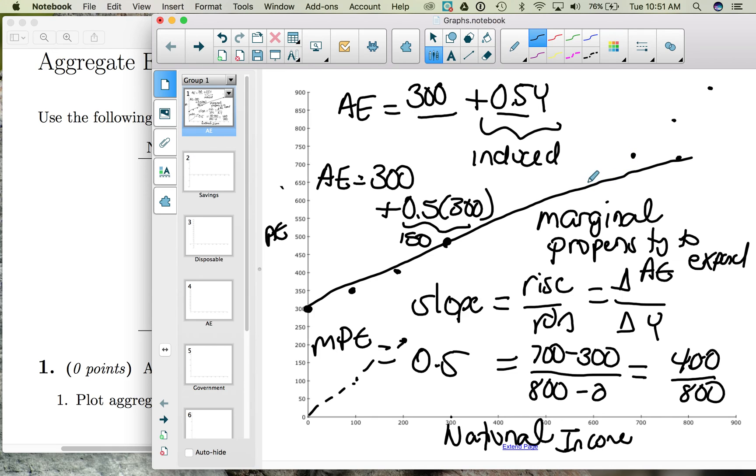So we'll draw our 45 degree line and here's the 800, here's the 700, here we have our 600. And we can connect this 45 degree line.